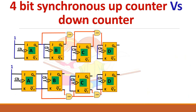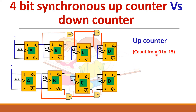The difference between a 4-bit synchronous up counter and down counter: in the up counter you connect QA and QB to an AND gate; in the down counter you take QA bar and QB bar. Similarly, for the next flip-flop, the up counter uses QC while the down counter uses QC bar. The up counter counts from 0 to 15; the down counter counts from 15 to 0.